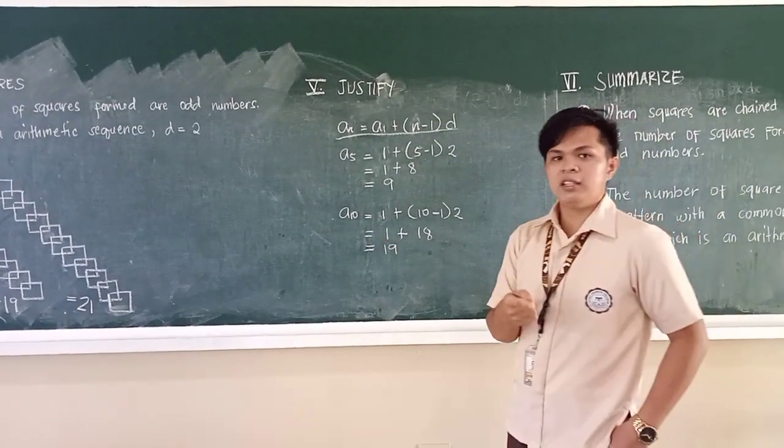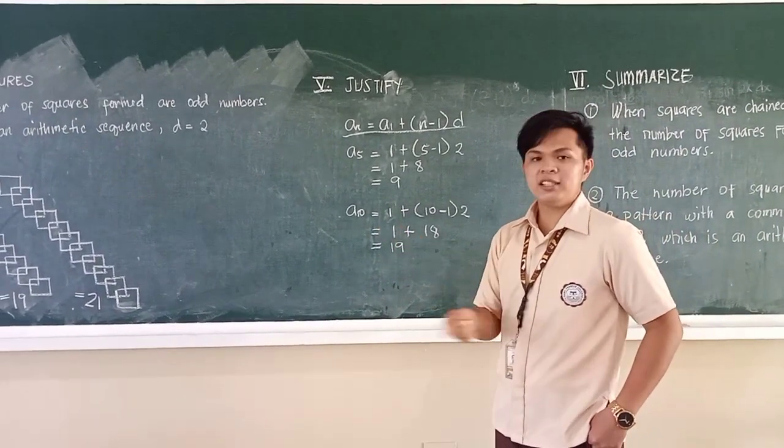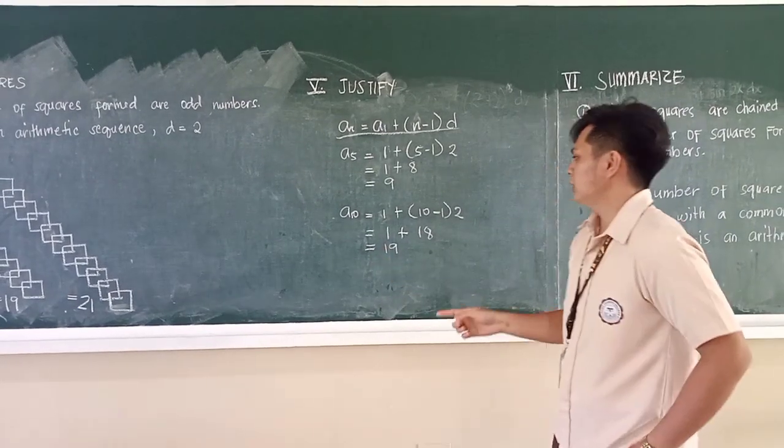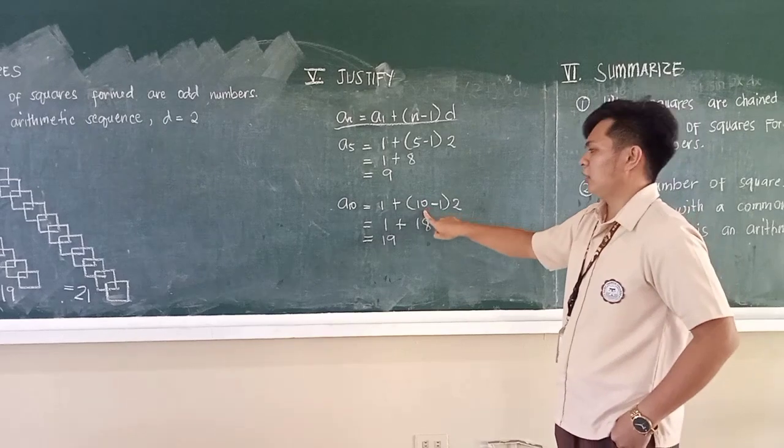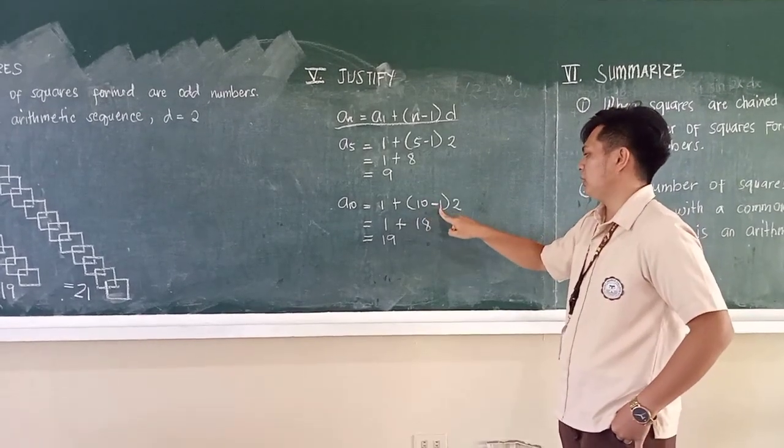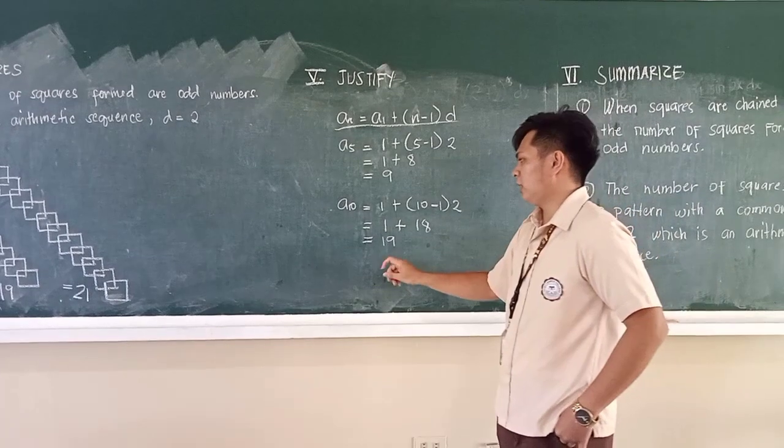Next is ten, which is in the verification of the conjecture. So we will substitute again with one and ten in the number of squares minus one times two, with the result of 19. So this justifies the conjecture.